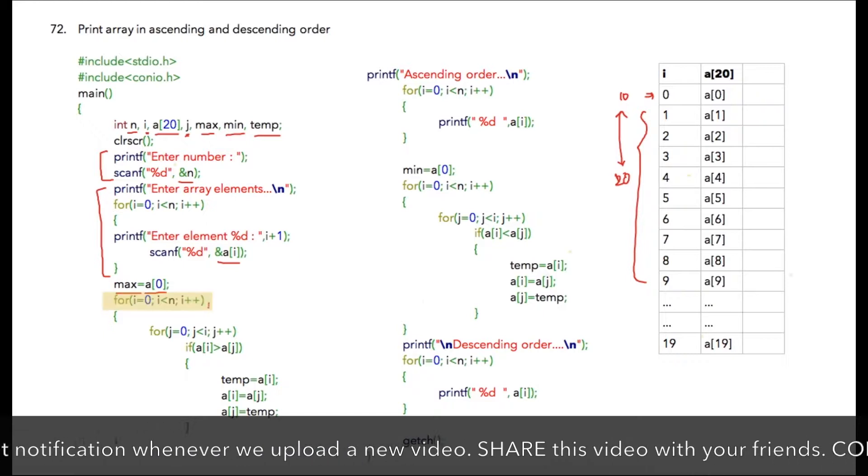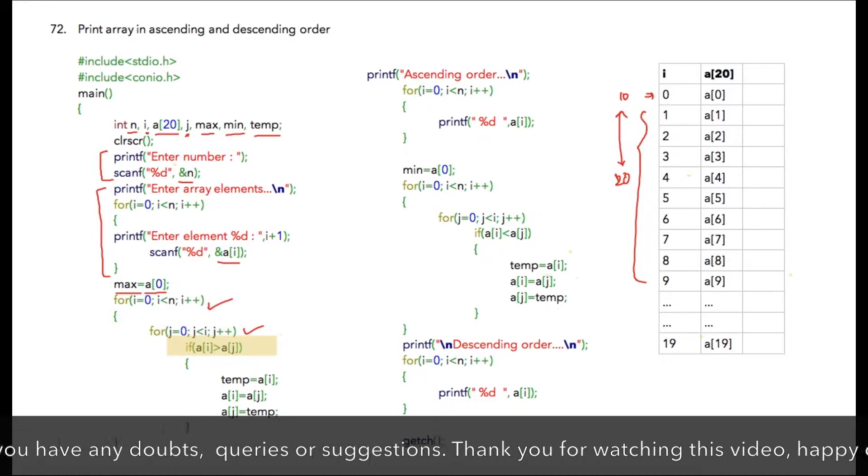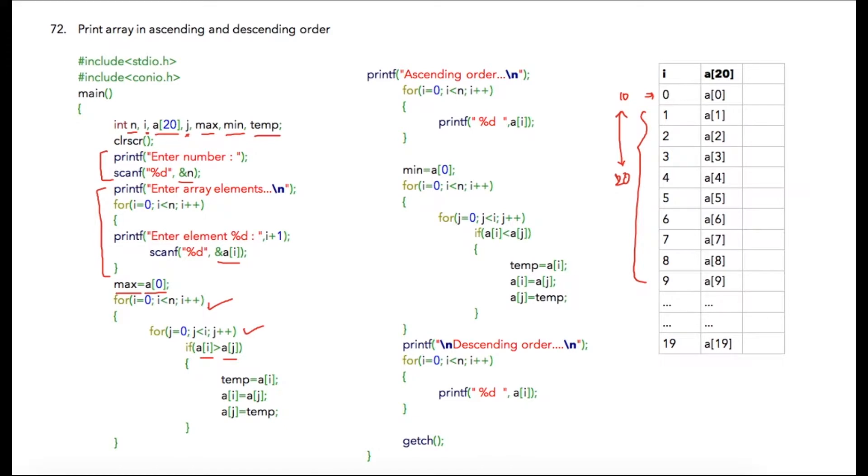Inside the for loop, I'm checking if a[i] is greater than a[j]. If the condition is true, then we swap two values - we replace the value of a[i] with the value of a[j] and replace the value of a[j] with the value of a[i]. Once this loop gets completed, we will have all the numbers in ascending order. We just need to print those numbers using this for loop.